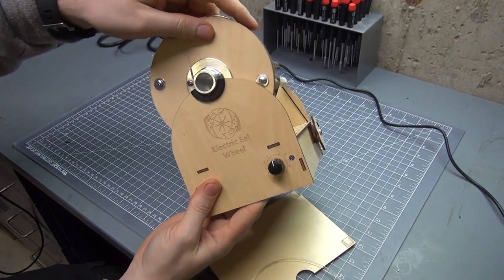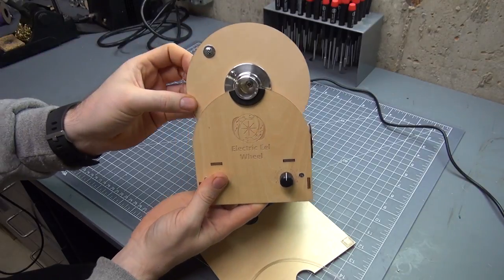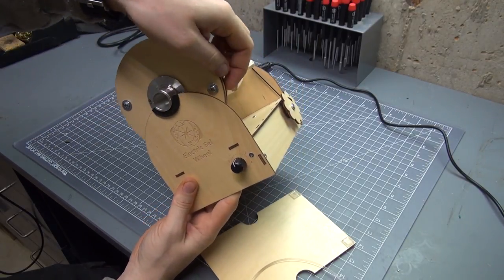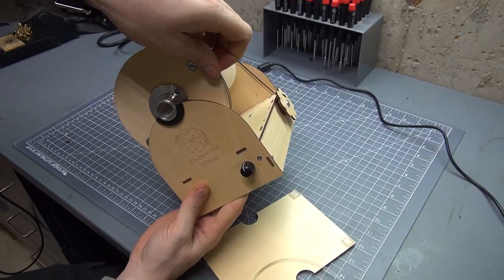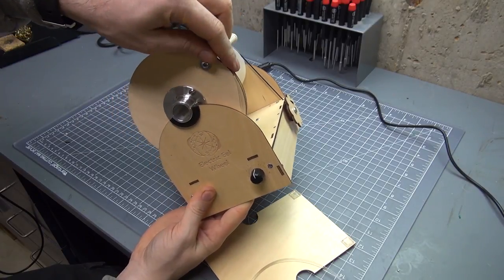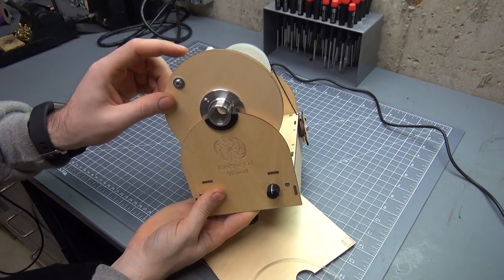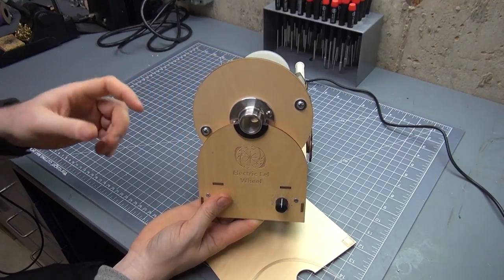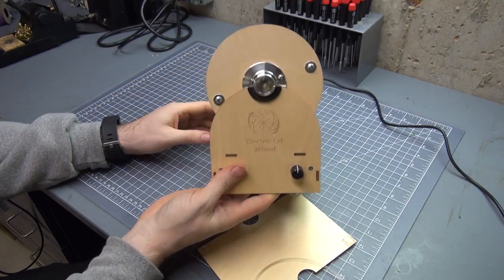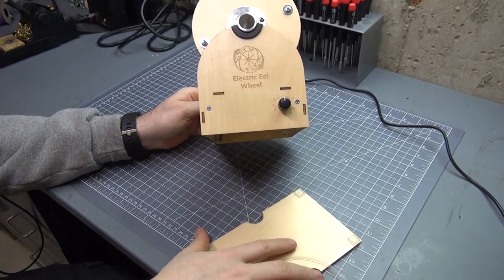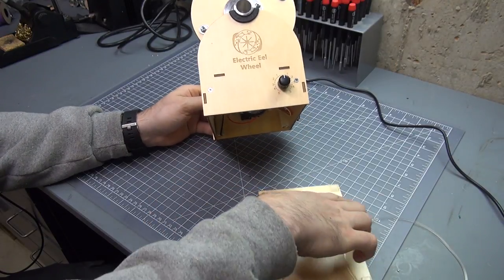So sometimes it gets a little caught up on these screws here. That's what was happening before. Just try again and it'll slide on pretty easily like that. So now I've got the new drive belt on.